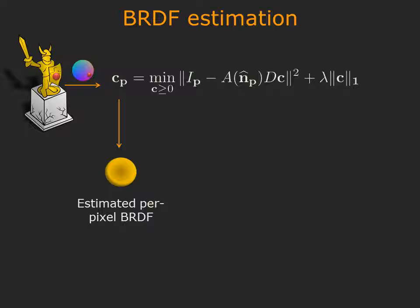Now that we have the normal estimate, we can estimate the per-pixel BRDF as well. At this stage, we now have the per-pixel surface normal as well as a per-pixel BRDF estimate. This ability to get BRDF estimates at a per-pixel level is unprecedented and is a hallmark of our approach.